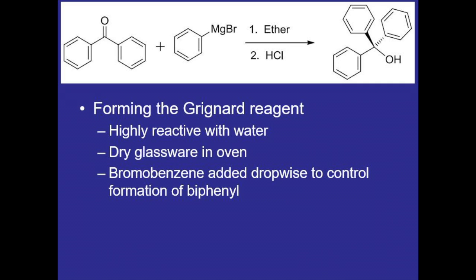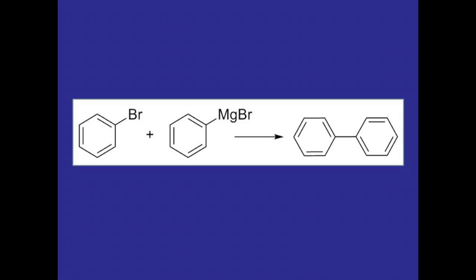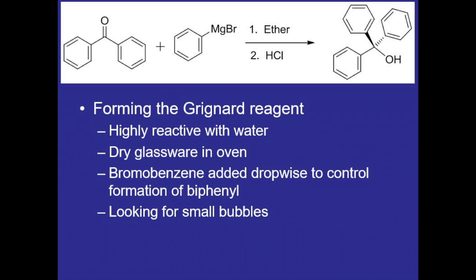Also, bromobenzene should be added slowly drop-wise to control the formation of biphenyl contamination. If it is added too quickly, it'll react with the Grignard reagent forming and create this biphenyl contamination, which we'll be checking for in the experiment using a TLC plate. While adding the reagents, we'll be looking for the formation of small bubbles. This is an indication that the reaction is happening.